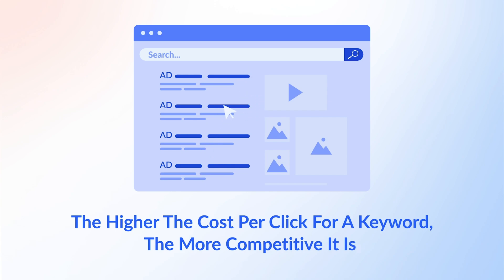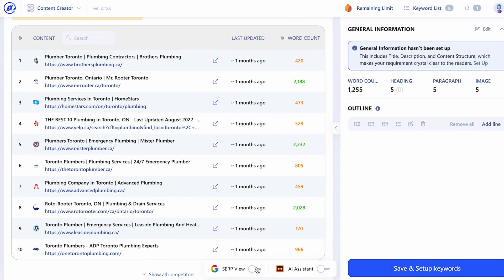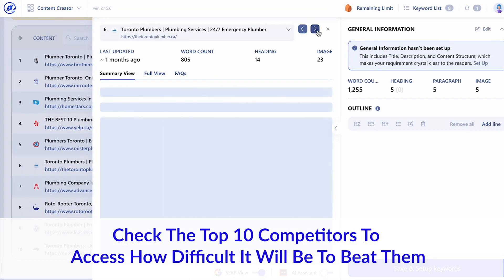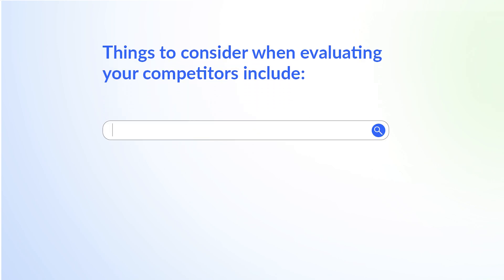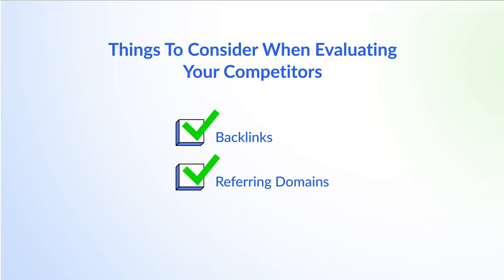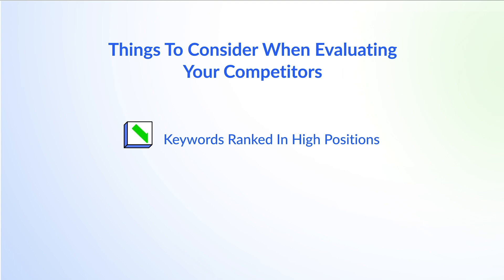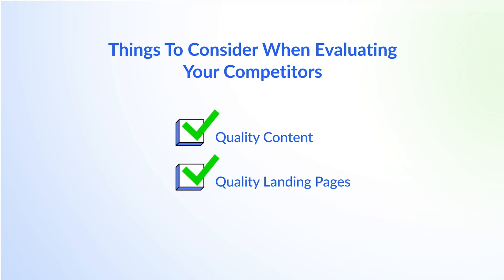That's always a good indication that there's money to be made. If the keywords you're targeting are directly related to a product or service — for example, 'air conditioning in Idaho' or 'plumber in Toronto' — make sure you check out the top 10 competitors to assess how difficult it will be to beat them. Things to consider when evaluating your competitors include whether their domain names include the keyword, their branding, the number of backlinks and referring domains they have, how many competitive keywords they're already ranking for in high positions, and the quality of their content and landing pages. Knowing about the niche you're targeting will help you better assess the quality of your competition's content.